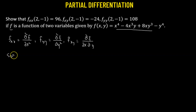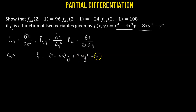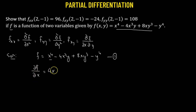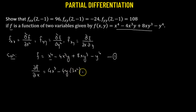We will start with what we have been provided. The function f is given by x raised to the power of 4, minus 4x cubed y, plus 8xy cubed, minus y raised to the power of 4. Let's consider this equation number one and take the partial derivative of f with respect to x. The partial of x to the power 4 is 4x cubed. Whenever we take the partial derivative with respect to x, y is treated as a constant, so negative 4y multiplies the partial derivative of x cubed with respect to x, giving 3x squared.